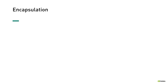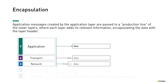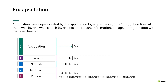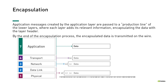In order to understand how data is transmitted between applications, it's important to understand what encapsulation is. The sending application creates messages that are passed to a production line of the lower layers, where each layer adds its relevant information in a process known as encapsulating the data with a layer header. The header is supplemental data placed at the beginning of a block of data when it is transmitted. The supplemental data is used at the receiving side to extract the data from the encapsulated data packet. This packing of data at each layer is known as data encapsulation. By the end of the encapsulation process, the encapsulated data is transmitted on the wire.